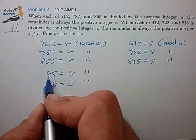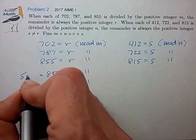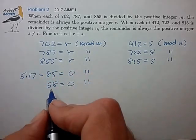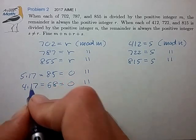And let's factor 85. 85, we can divide 5 into that. That's 5 times 17. 68, we can divide 4 into that. So that's 4 times 17.